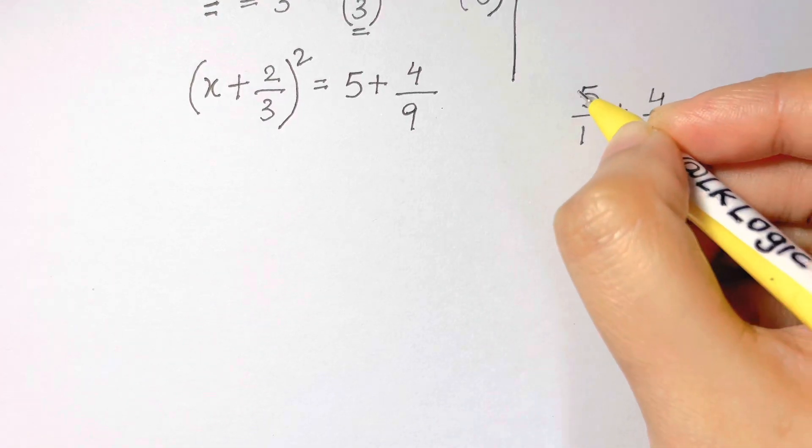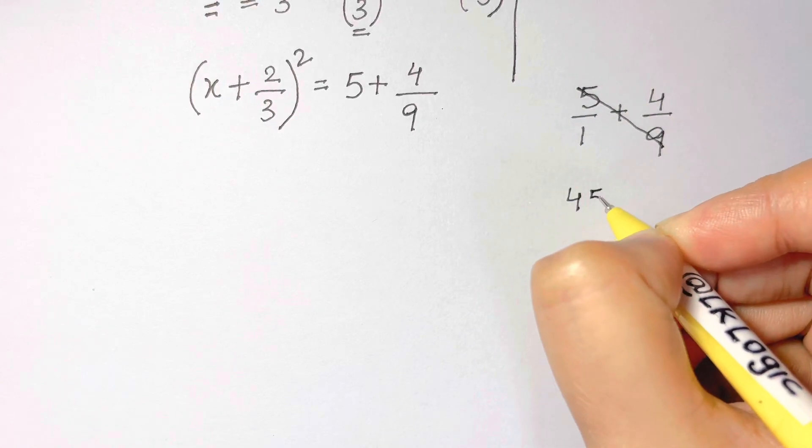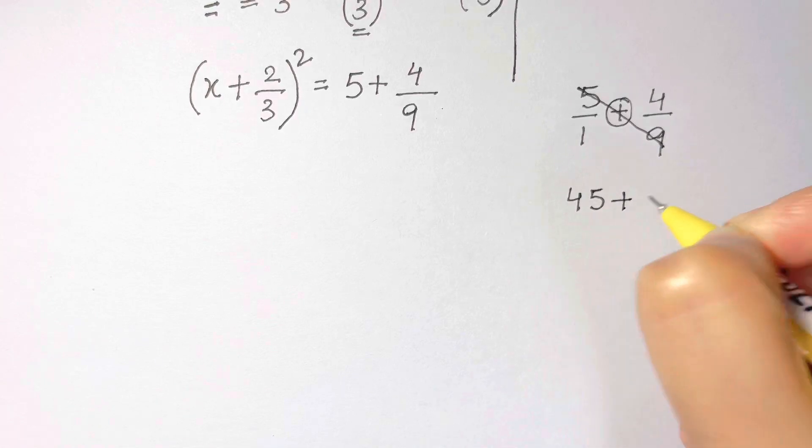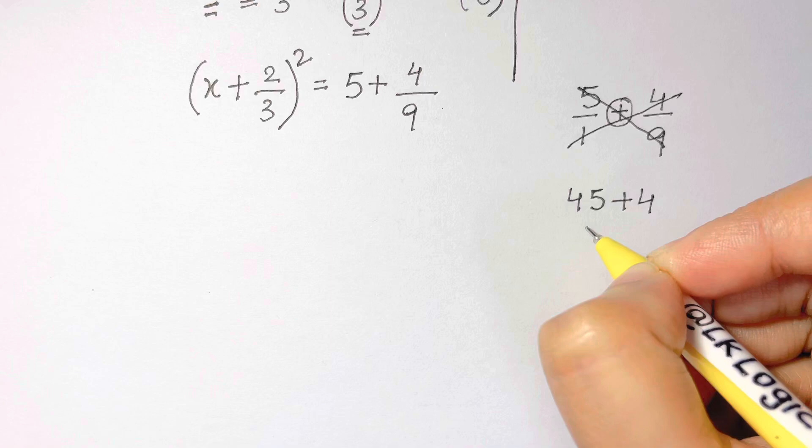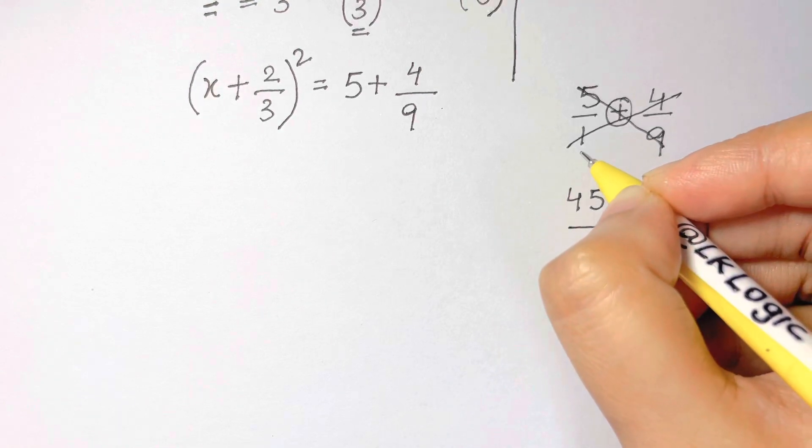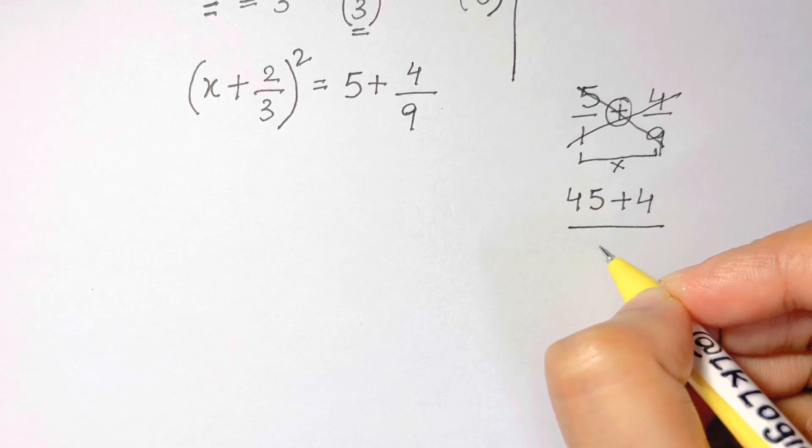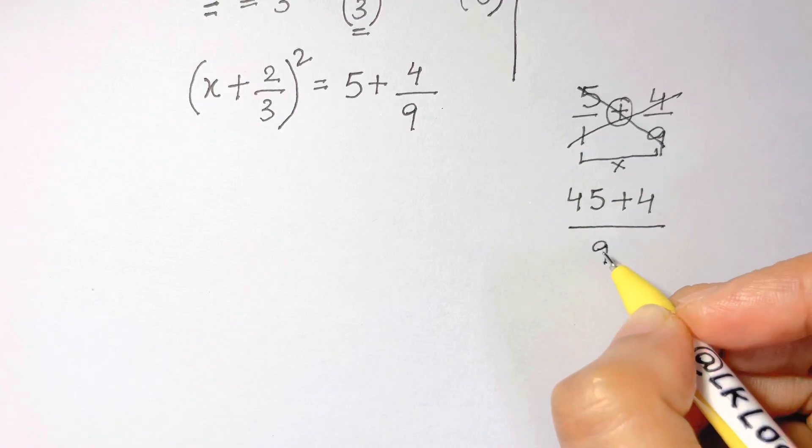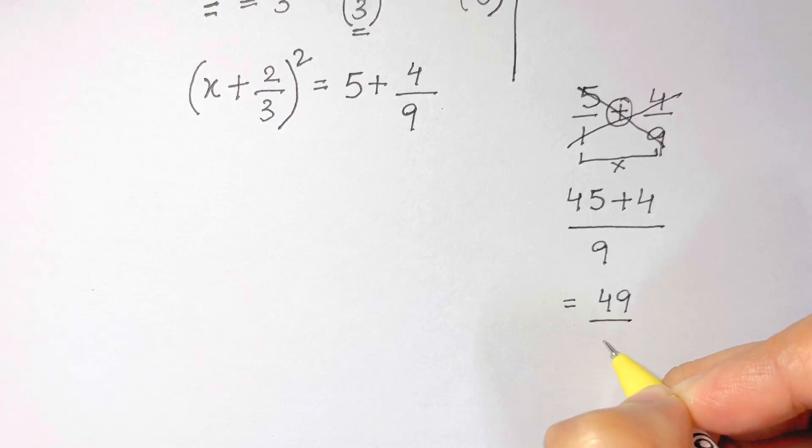The simplest way is to simply cross multiply them. 5 times 9 is 45, and whatever is the sign just put in, and then multiply 4 times 1 which is equal to 4, and divide it by the bottom numbers. 1 and 9, we multiply them, 1 times 9 equals 9. So 45 plus 4 divided by 9, we get 49/9.